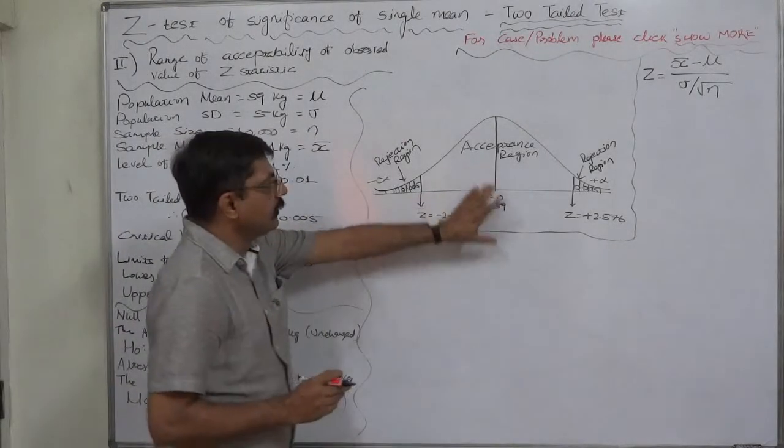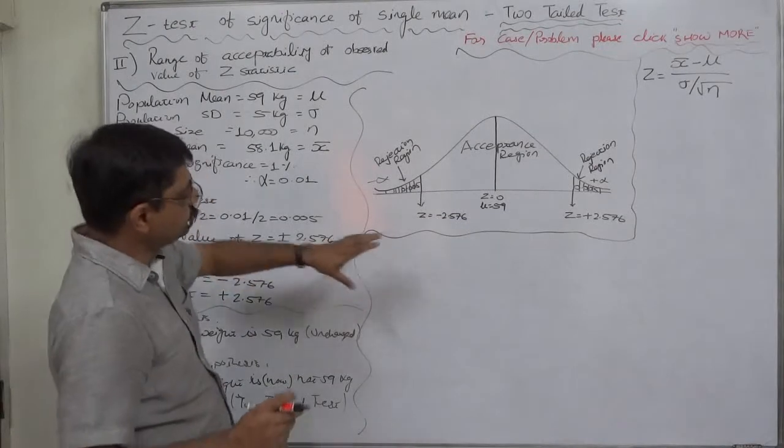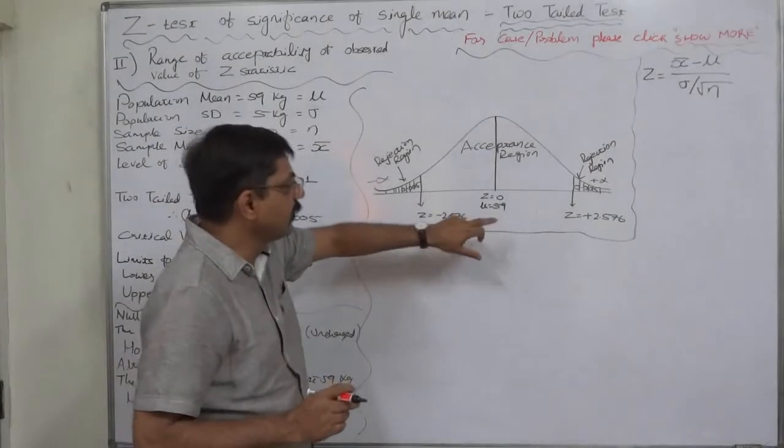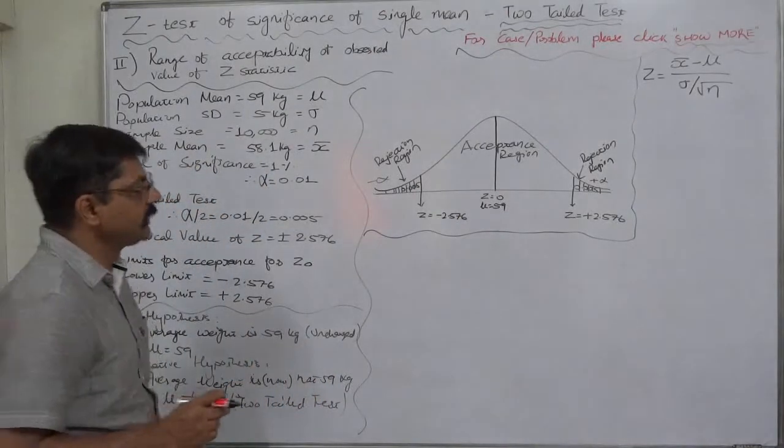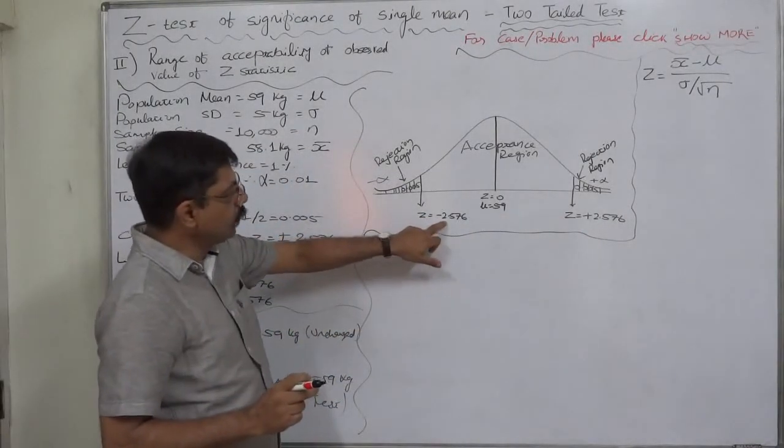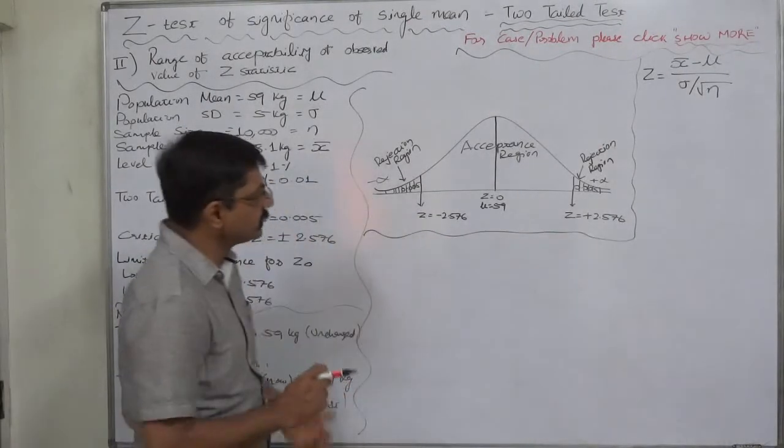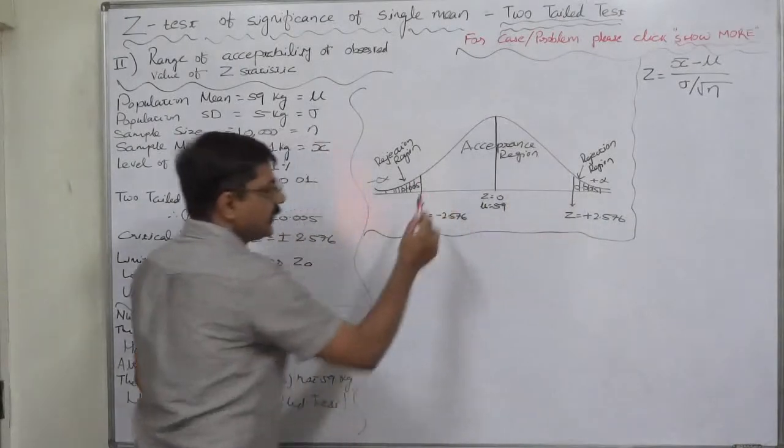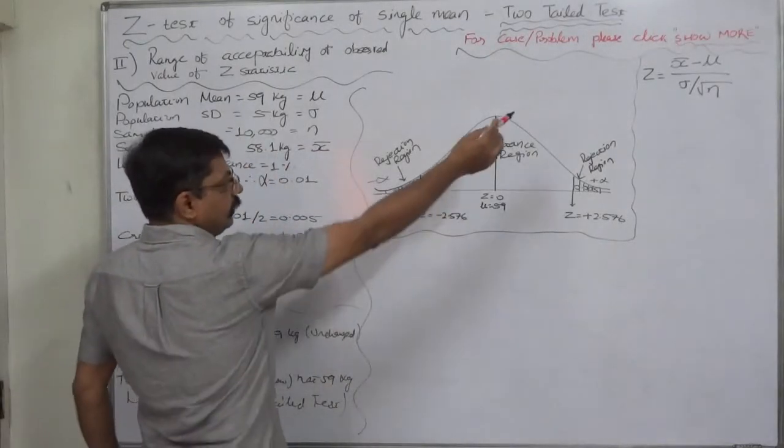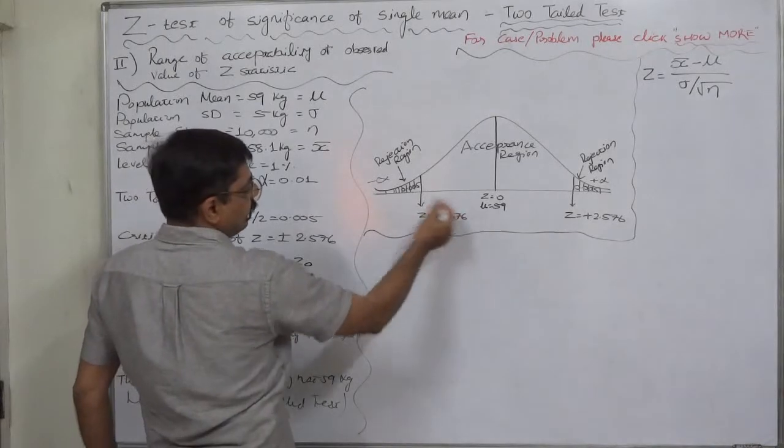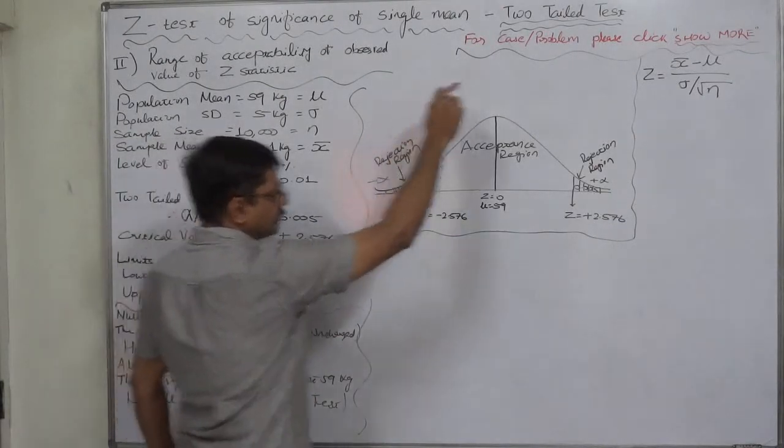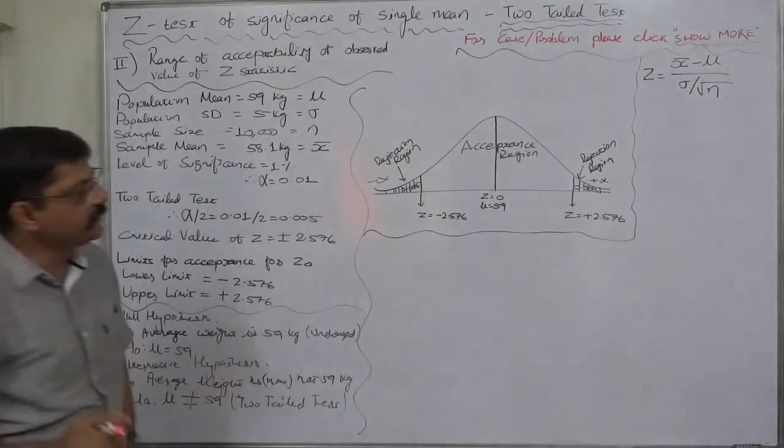This is the sketch of the diagram of normal curve, area under normal curve. You can see that z is 0 because at this point, sample mean and population mean both are equal and hence the calculated value of z comes to 0. So these are the critical values, lower limit and upper limit. Here, this is z equals to minus 2.576, z equals to plus 2.576. If the calculated value or observed value of z comes within this range, we have to accept the null hypothesis. But if the calculated value of z is less than this critical value, then we have to reject and z observed falls in the rejection region.